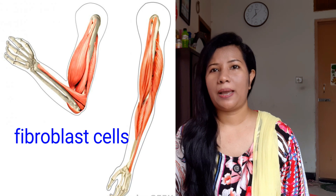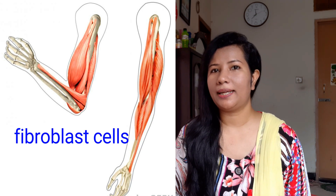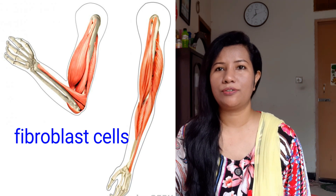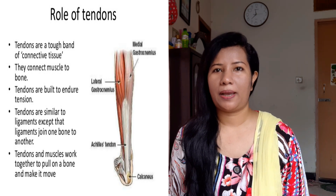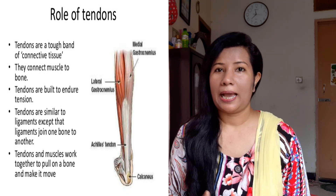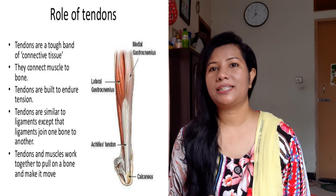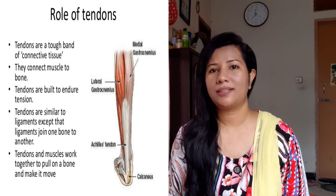There are fibroblast cells in the fibers. On the other hand, tendons are composed of dense white fibers and connective tissues. Blood vessels, lymphatic ducts, and nerves enter into the tendons through these areolar tissues.